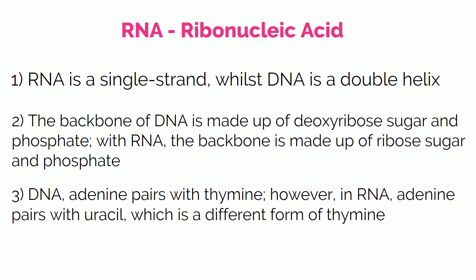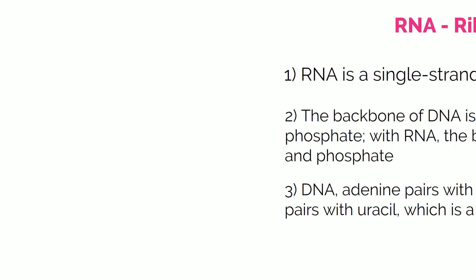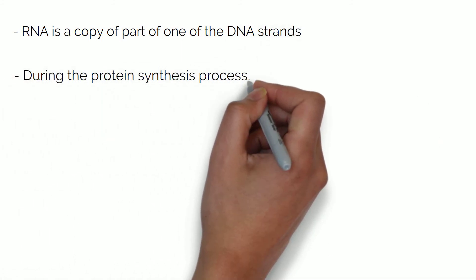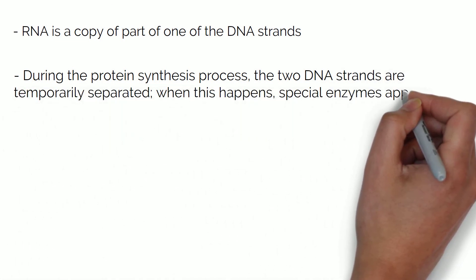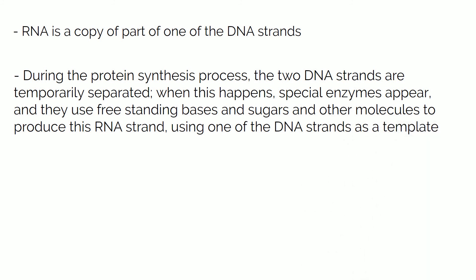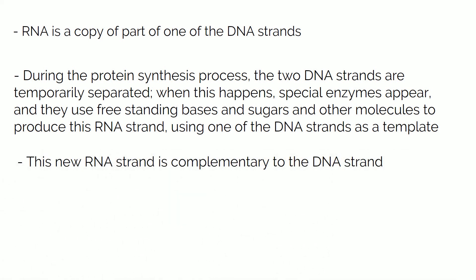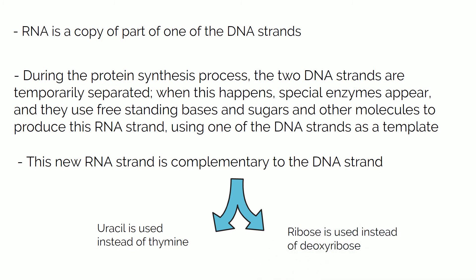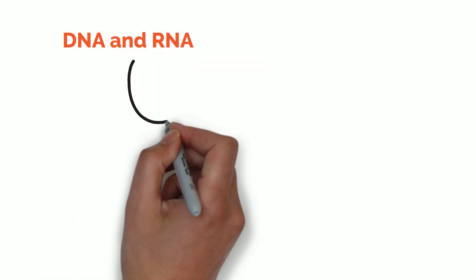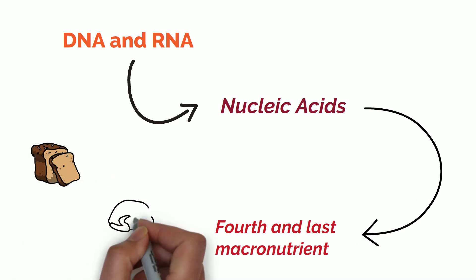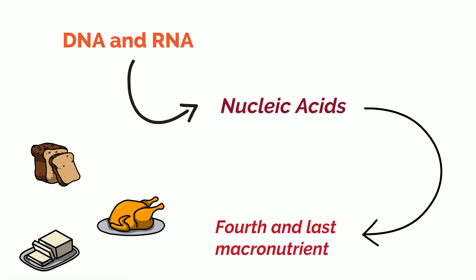So what does one have to do with the other? That is because they are linked to each other. Remember that protein synthesis process I mentioned earlier? This is where RNA comes in. RNA is a copy of part of one of the DNA strands. During protein synthesis the two DNA strands are temporarily separated, and special enzymes use free-standing bases, sugars, and other molecules to produce an RNA strand using one of the DNA strands as a template. This RNA strand is complementary to that DNA strand, except uracil is used instead of thymine and ribose instead of deoxyribose. These two molecules — RNA and DNA — are the nucleic acids, the fourth and last macronutrient, alongside carbohydrates, proteins, and lipids.